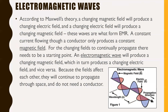According to Maxwell's theory, a changing magnetic field will produce a changing electric field, and vice versa. These waves are what form EMR. A constant current only produces a constant magnetic field. For the changing fields to continually propagate, there needs to be a starting point. Because the fields affect each other, they will continue to propagate through space and do not need a conductor — just think about light, which passes through the vacuum of space and doesn't need a medium.